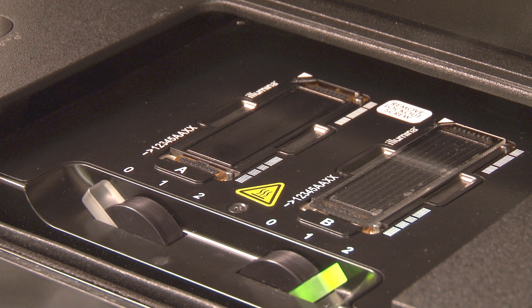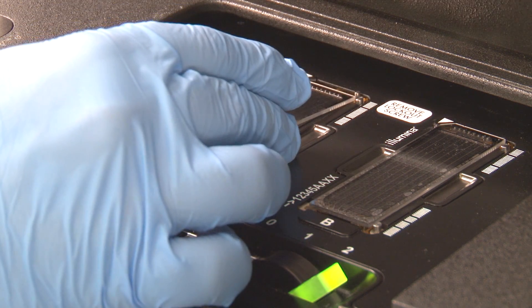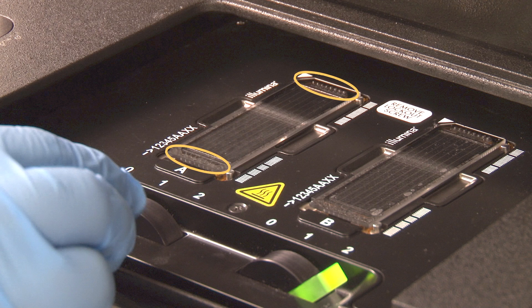When loading a flow cell onto the HiSeq, make sure to register the flow cell against the guide pins in the back right of the flow cell holder. Visually make sure that the inlets and outlets of the flow cell are positioned above the inlet and outlet gasket opening. Some minor position adjustments may be made to the flow cell to ensure proper alignment with the gaskets and proper flow.